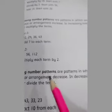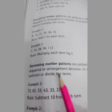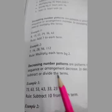Decreasing number patterns are patterns in which numbers of the sequence or arrangement decrease. In decreasing number patterns, we subtract or divide the terms.